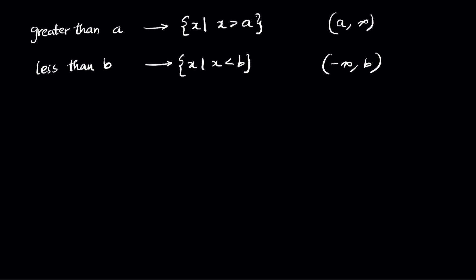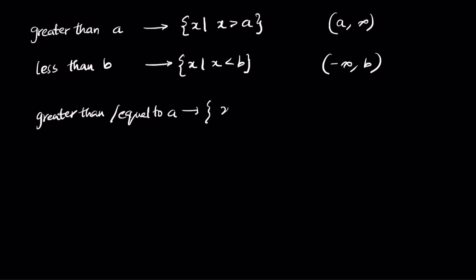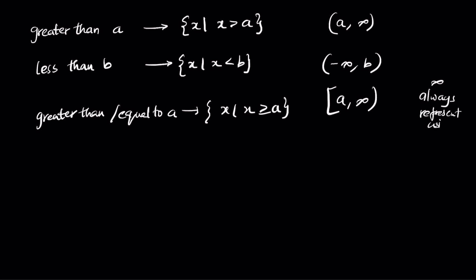If you have greater than or equal to a, it is x such that x greater than or equal to a, which becomes closed interval a comma infinity. For infinity, always use open intervals — whenever you have an infinity, you must use open intervals.